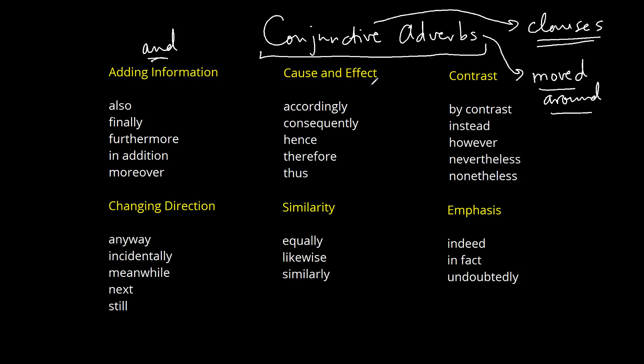The second category is a little bit like saying 'so' — that's the cause and effect kind of relationship. The third category is similar to saying 'but.' It's interesting that a lot of these are somewhat similar to coordinating conjunctions. 'And,' 'so,' and 'but' are all coordinating conjunctions, and you can think of these conjunctive adverbs as more formal, bigger ways of doing the same thing.